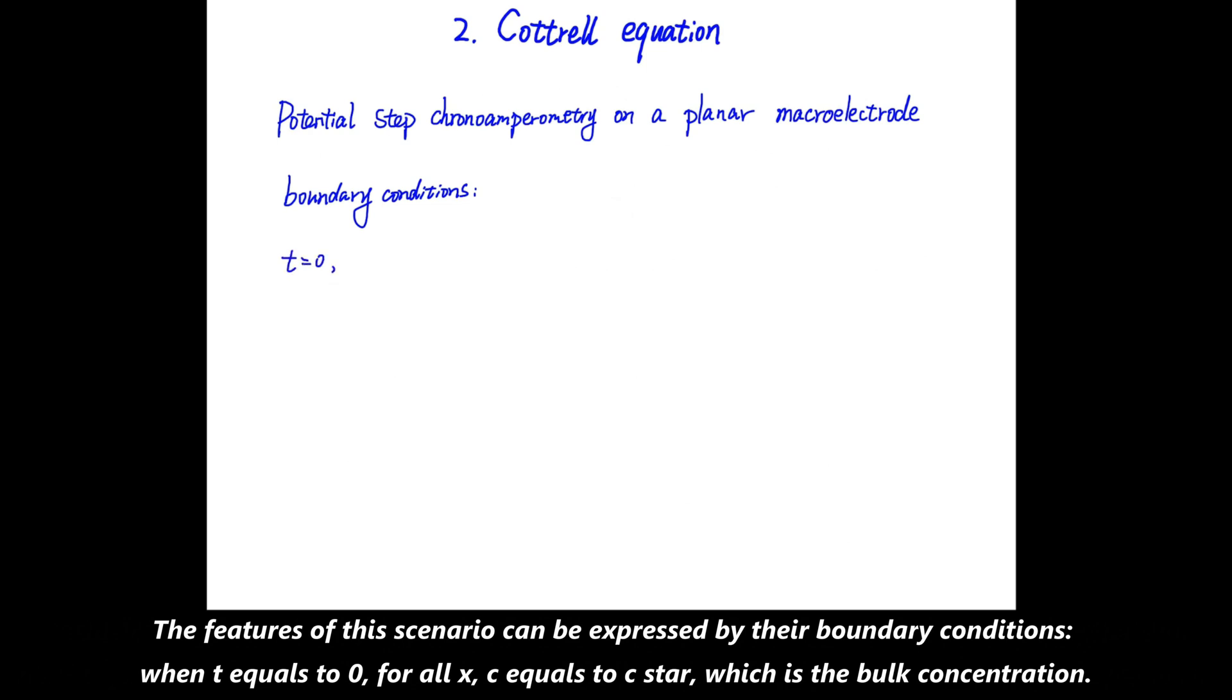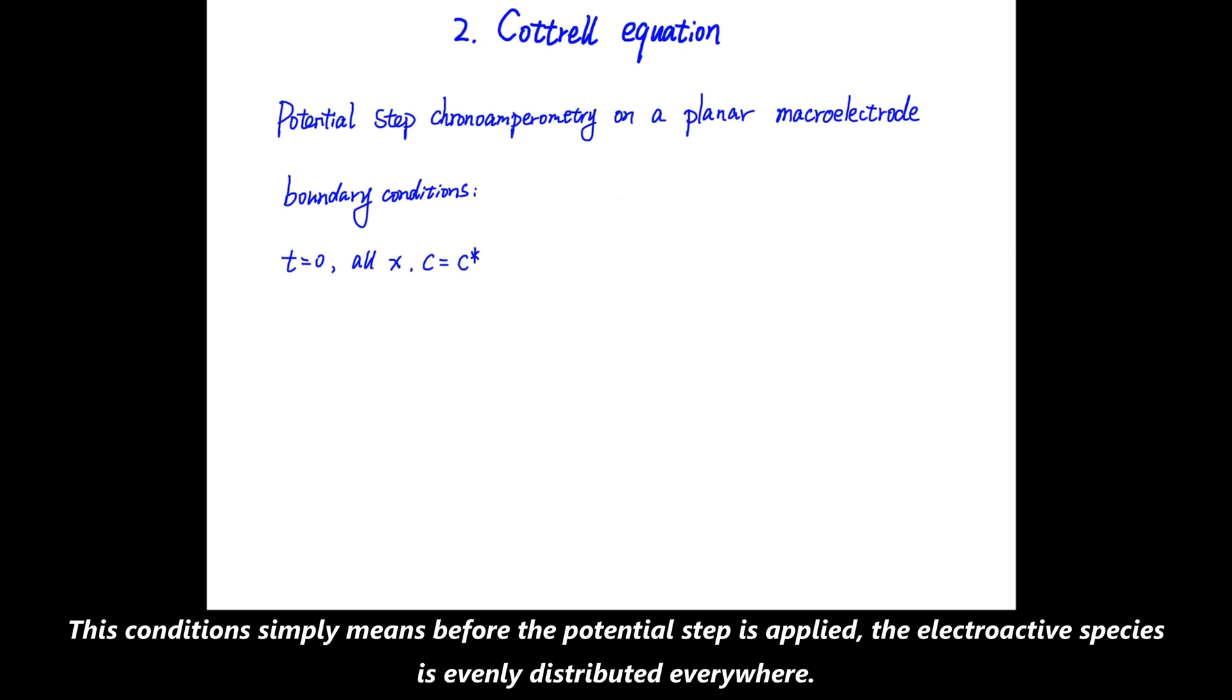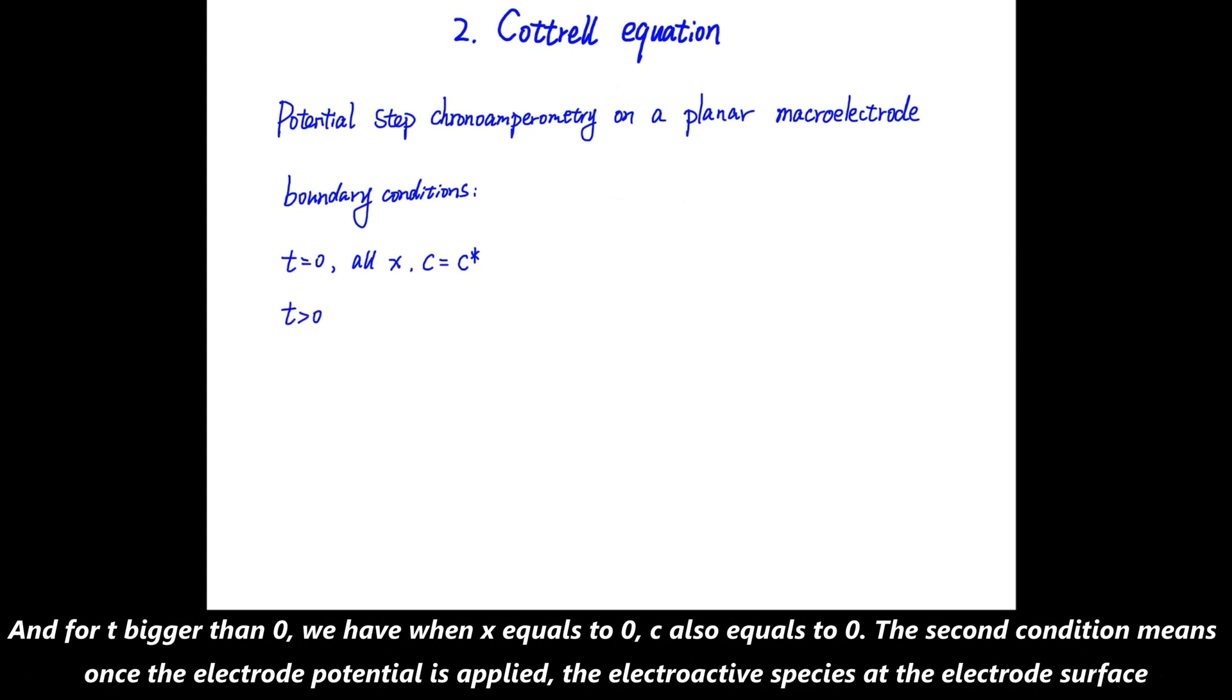The features of this scenario can be expressed by their boundary conditions. When t = 0 for all x, C = C*, which is the bulk concentration. And this condition simply means before the potential step is applied, the electroactive species is evenly distributed everywhere. And for t > 0, we have when x = 0, C also equals to zero.